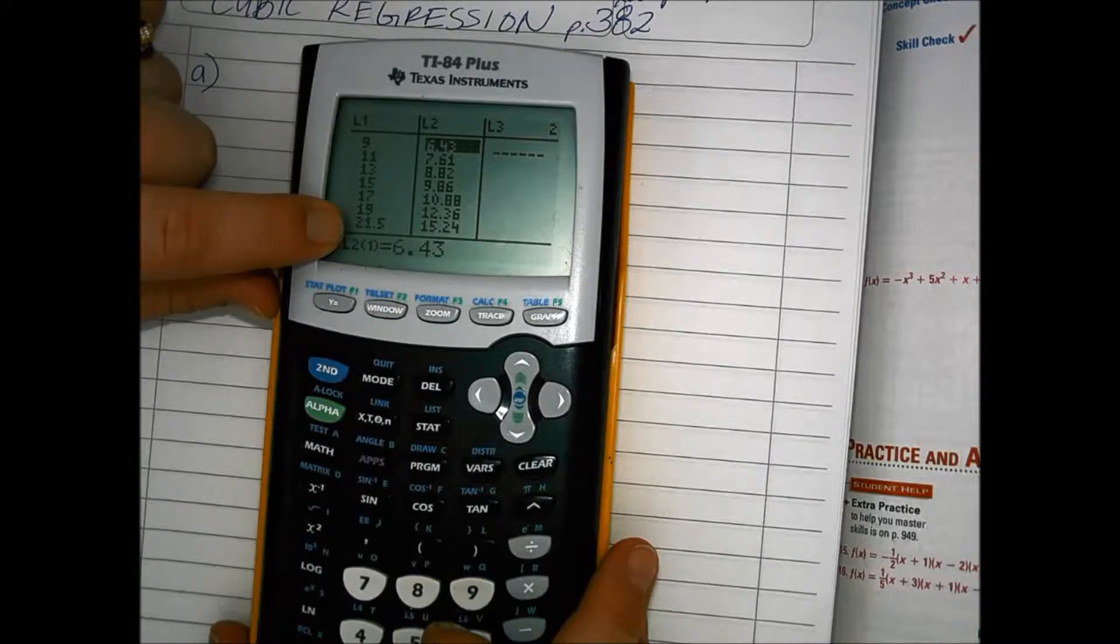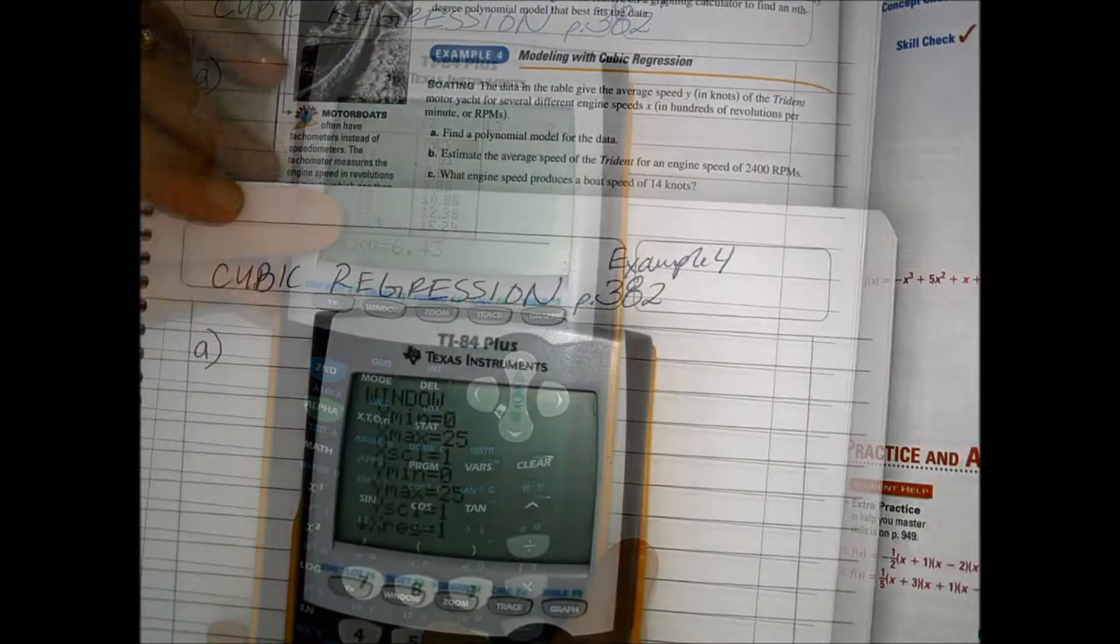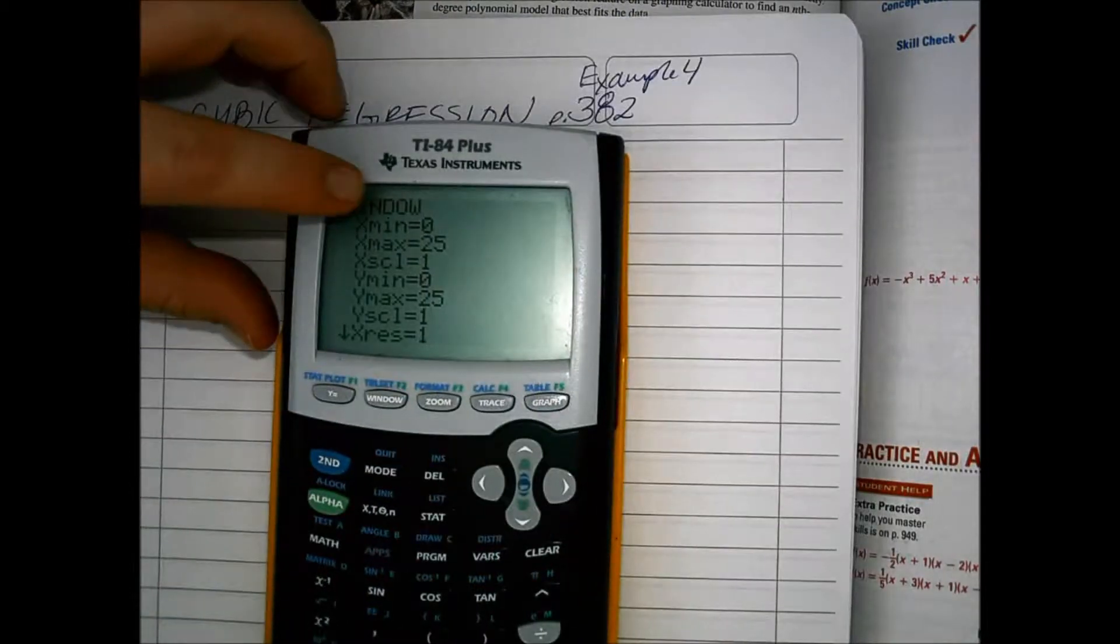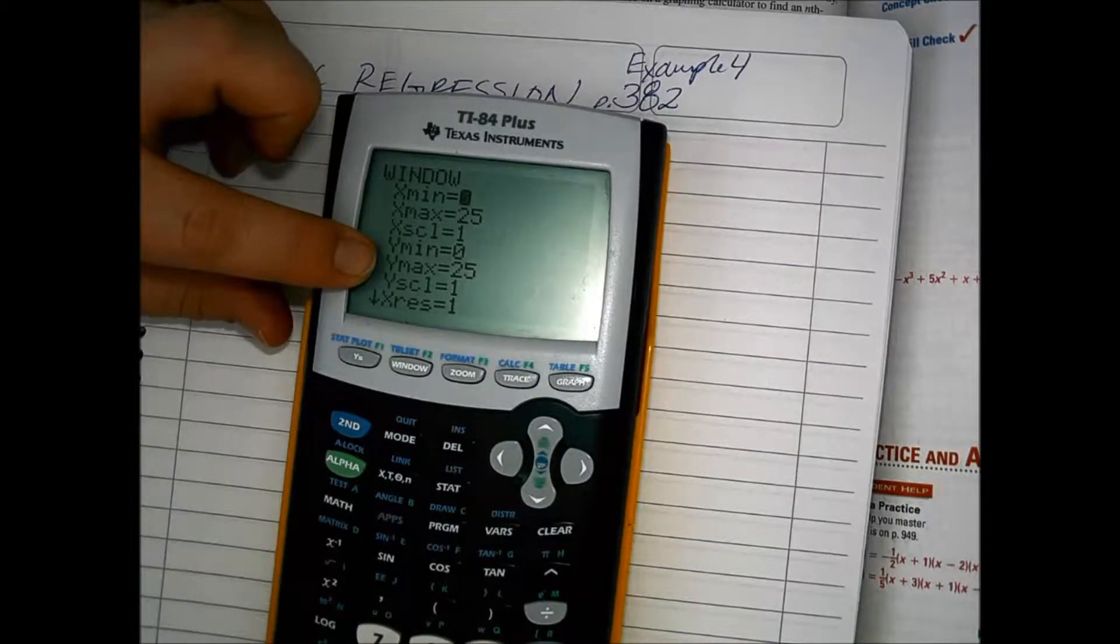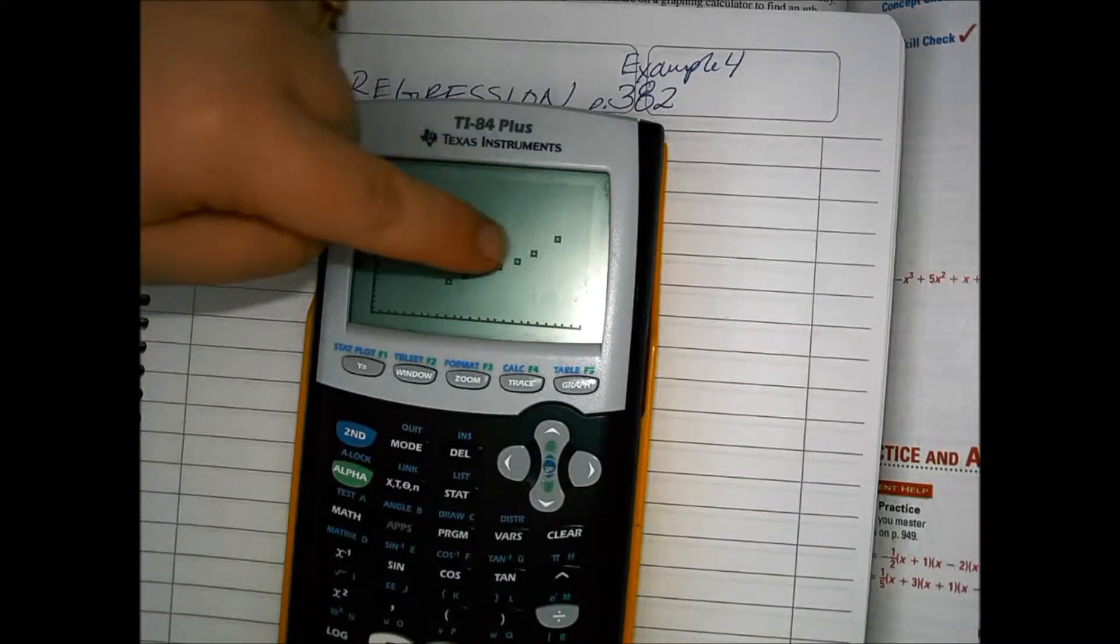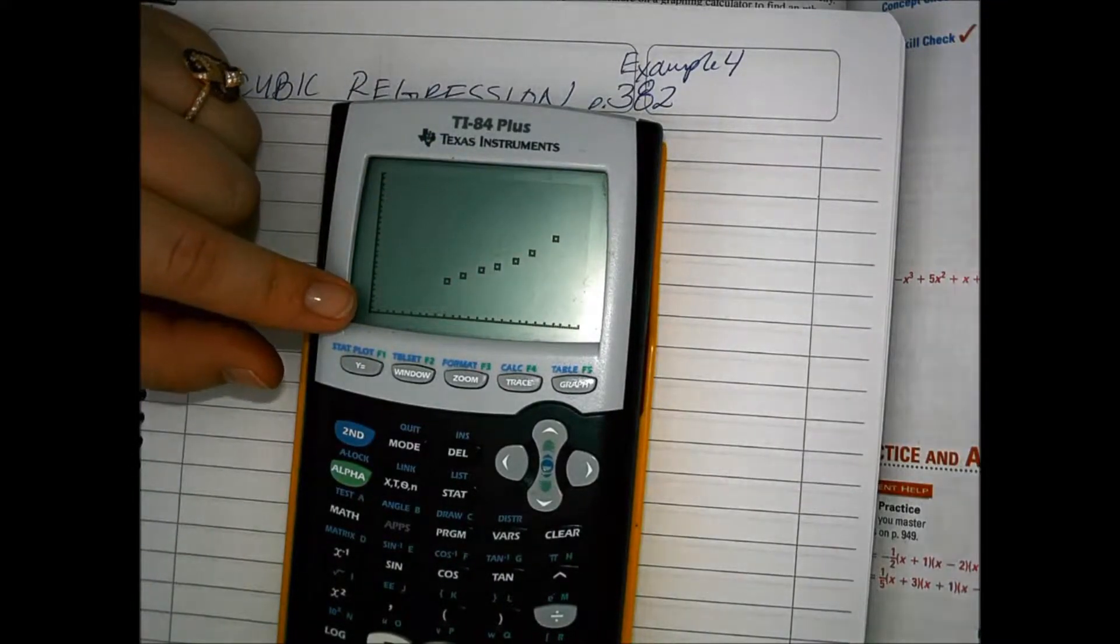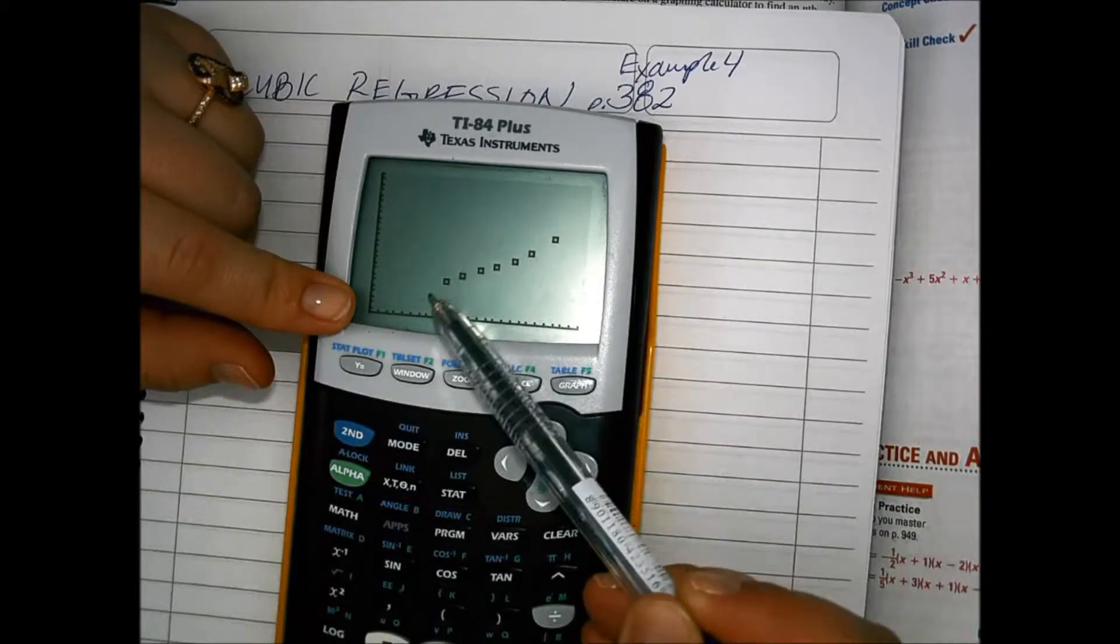Every single one of these represents hundreds of RPMs. So with a window of x min 0, x max 25, y min 0, and y max 25, then the graph, the data nicely fits into the window and you can see this kind of cubic curve happening.